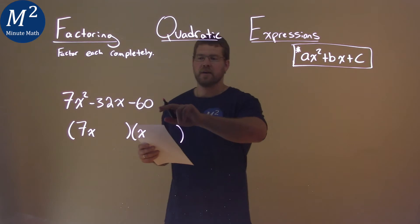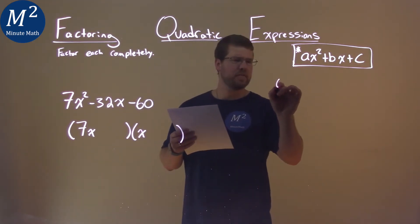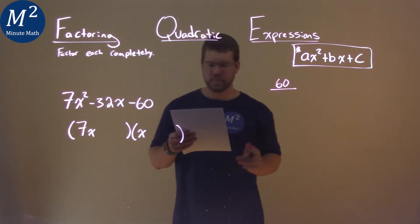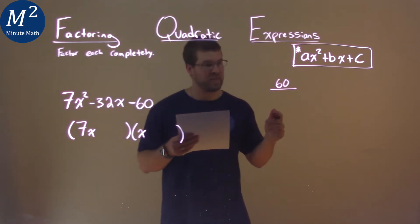Now let's look at our c value, 60, or negative 60, but let's just deal with a positive 60 first. What two numbers multiply to be 60? There's a lot of them.